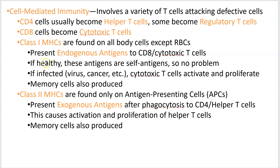If that liver cell were healthy, it would stick out its class 1 MHC and a T cell would come by and say you're good. If it's infected, it sticks out that class 1 MHC and helper T cells and cytotoxic T cells are going to say that cell is sick — we've got to get geared up to kill off some cancer or kill off some viruses. You also make memory T cells as a side effect.